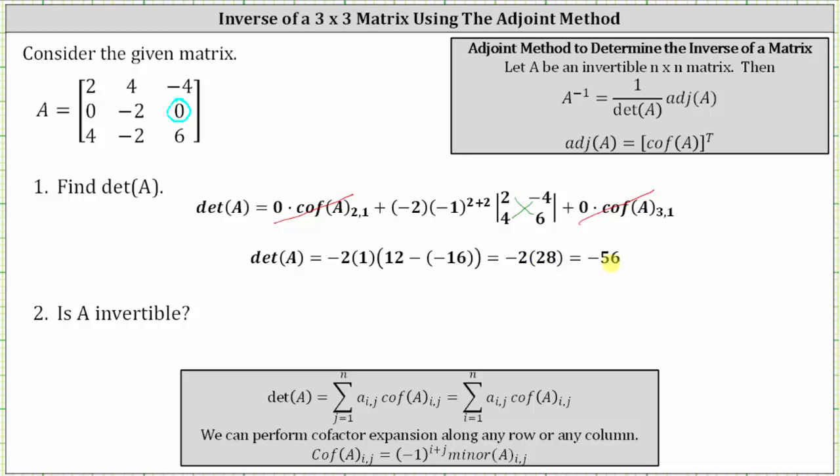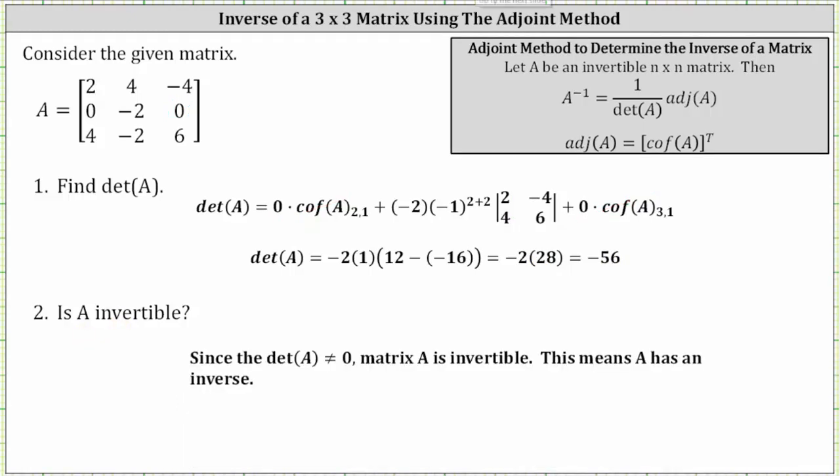For number two, is A invertible? Since the determinant does not equal zero, matrix A is invertible, which means matrix A does have an inverse.